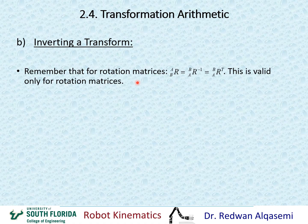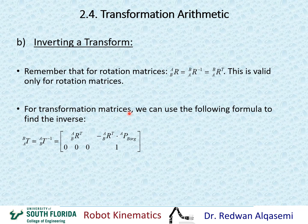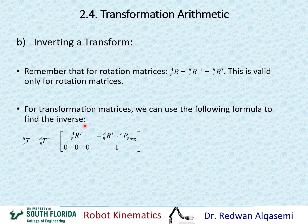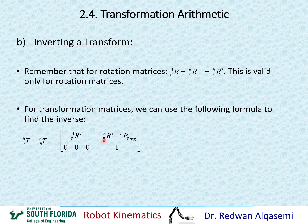For transformation matrices, we have a formula to get the inverse. T of A relative to B equals T of B relative to A inverse. The formula places the rotation portion of B relative to A transposed in the upper-left 3×3 block, and for the 3×1 translation vector, we use negative of the transposed rotation matrix multiplied by P of B origin relative to A. The bottom row remains the standard 0, 0, 0, 1.